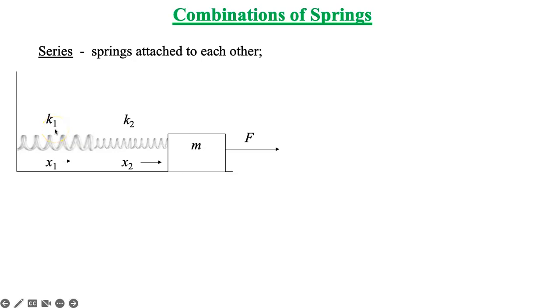But because they have different spring constants, there's no guarantee they're going to stretch by the same amount. In fact, if the spring constants are different, they definitely will not stretch by the same amount. And this is how we know they're in a series combination. Each one changes length by its own amount depending on their individual spring constants. And so we can say that the total stretch is just the stretch of spring one plus the stretch of spring two. X total is x1 plus x2.